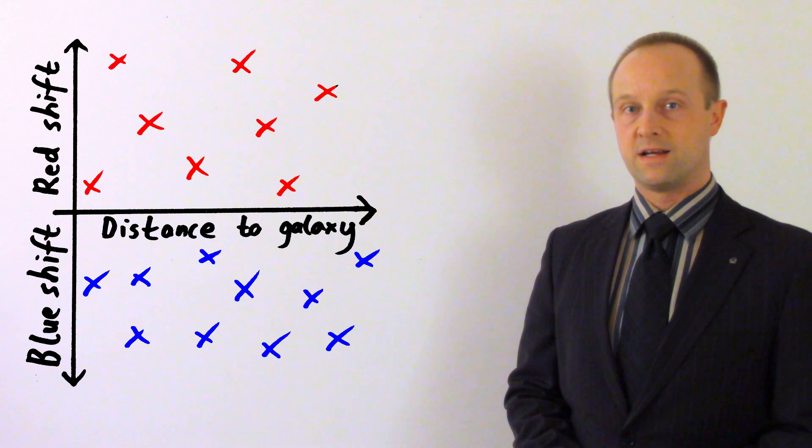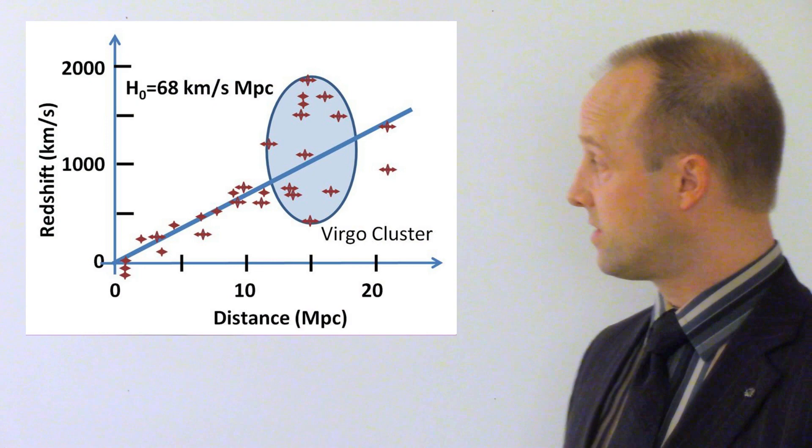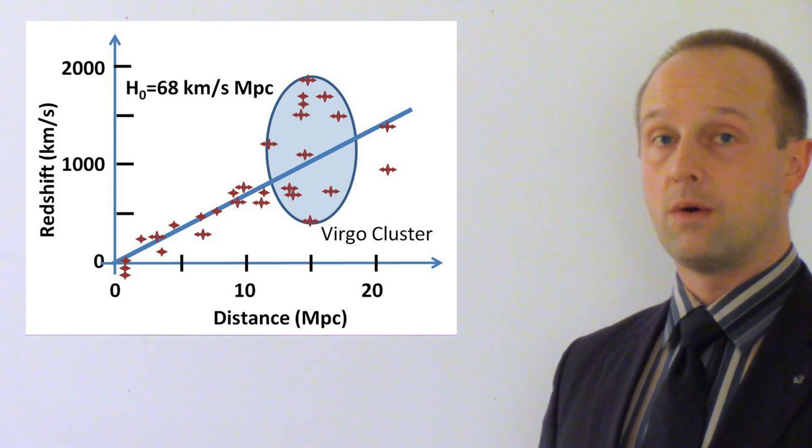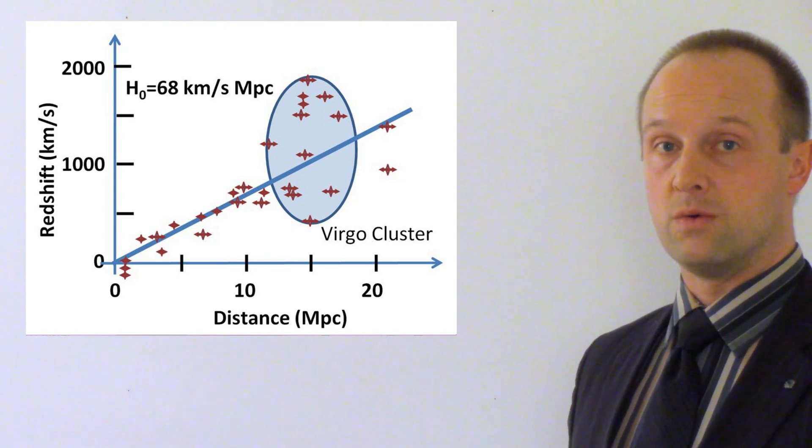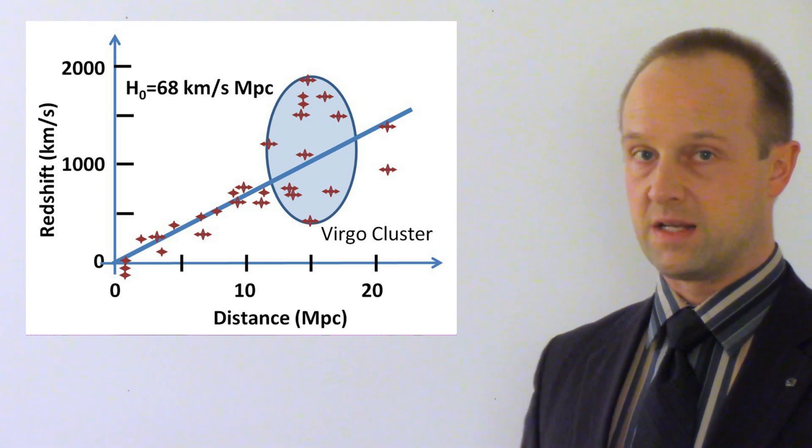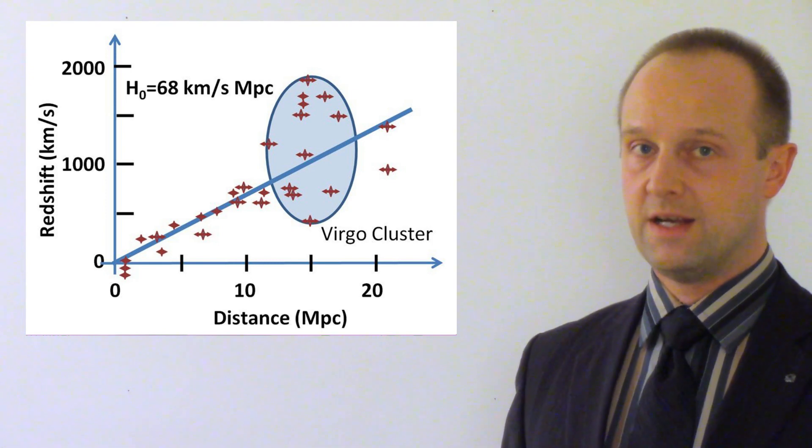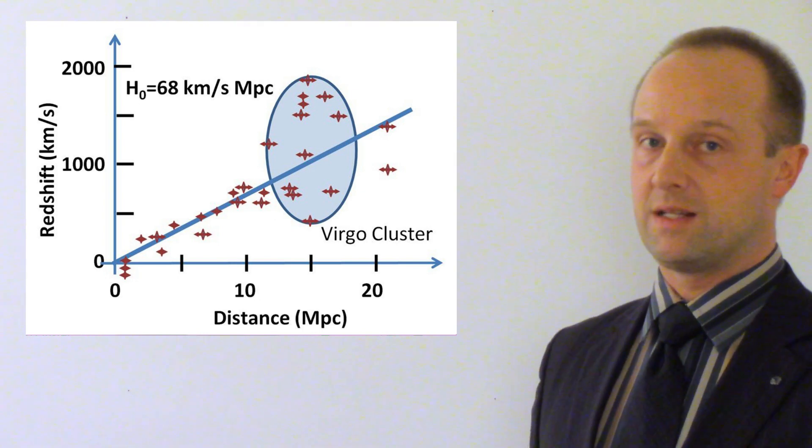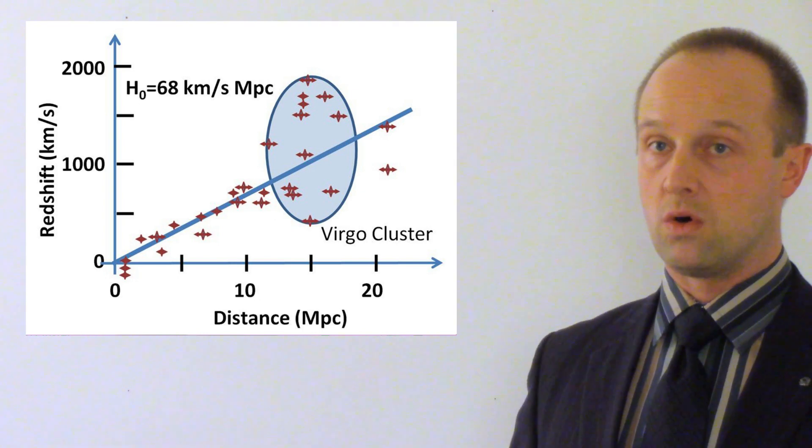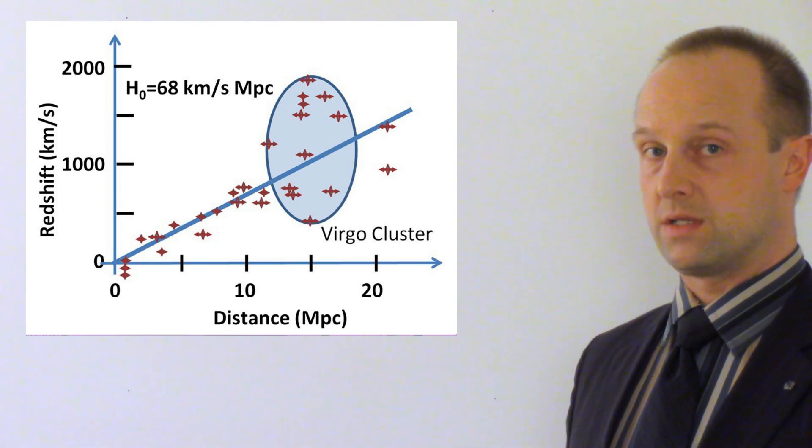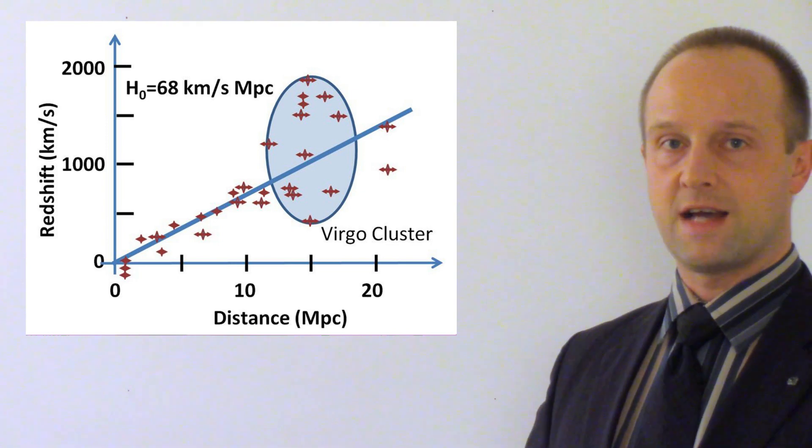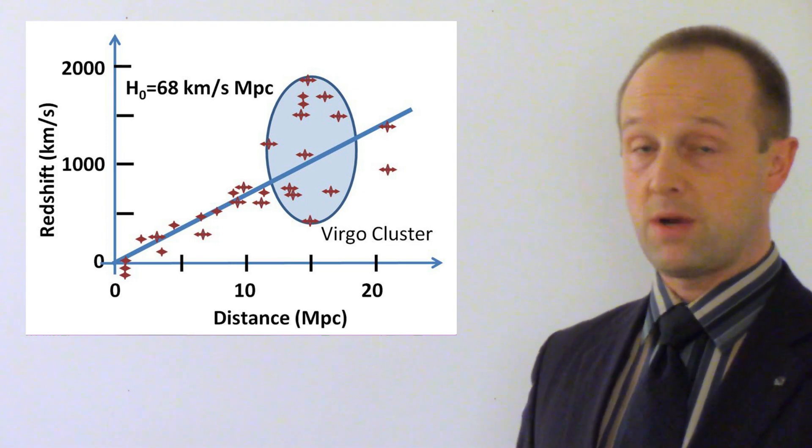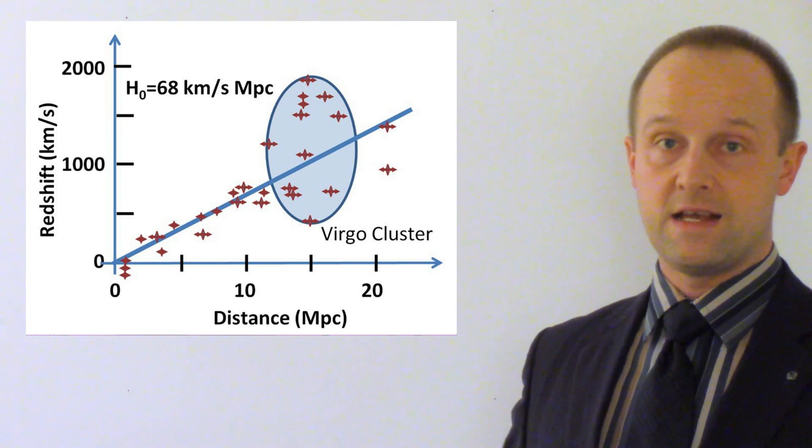When Hubble plotted the data, he found something much more interesting than this. He got a graph which looked like this. This shows something which no one was really expecting. That the further away a galaxy is from our own, the more redshifted the light is from it, at least as a general trend. Some things are a little bit above the line, and some things are a little bit below the line, but overall, we've got more or less a straight line through all these points. And this tells us something really important, that the most distant galaxies are moving away from us the fastest, and that pretty much every galaxy in the universe is moving away from us.